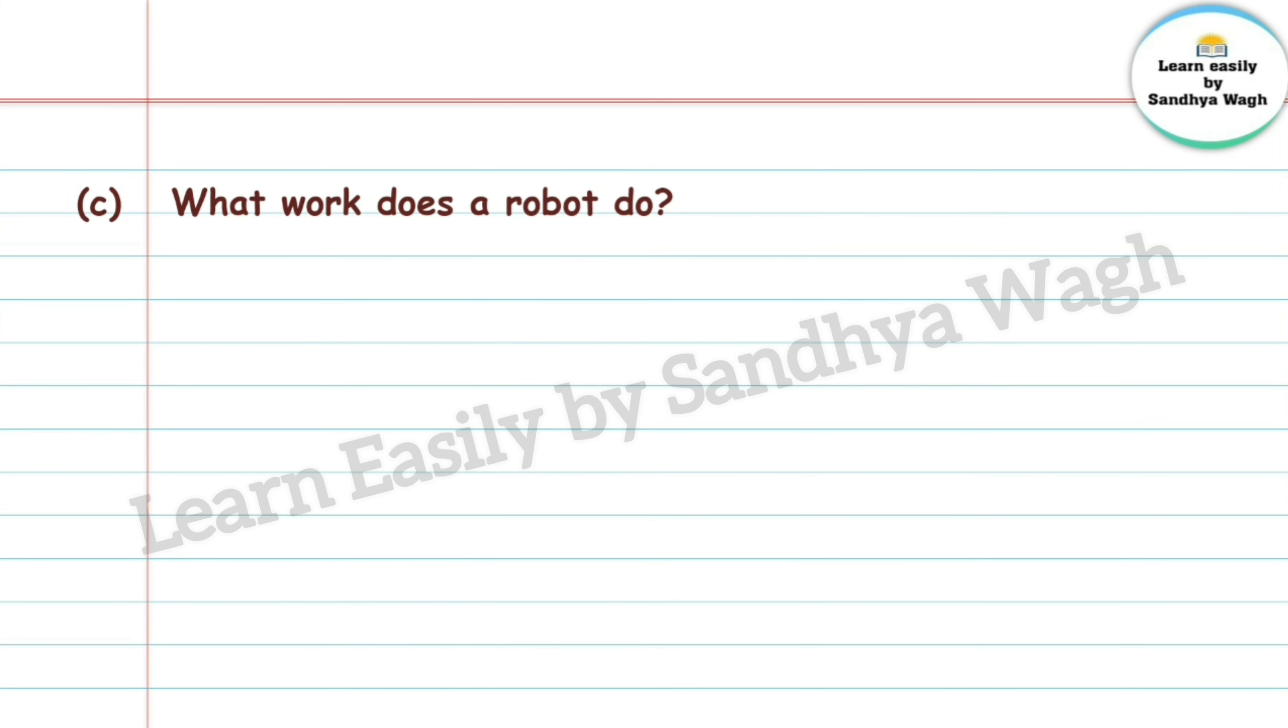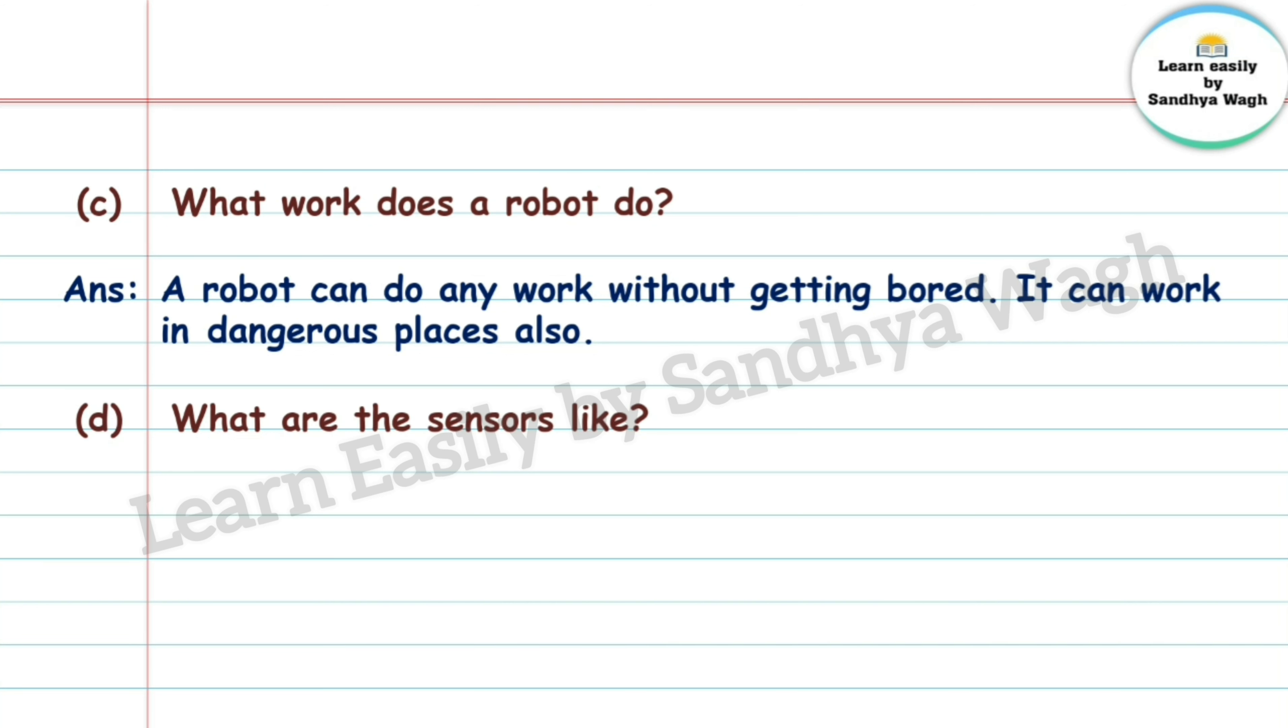C. What work does a robot do? Answer: A robot can do any work without getting bored. It can work in dangerous places also. D. What are the sensors like? Answer: The sensors are like the robot's eyes, ears, nose, skin etc.